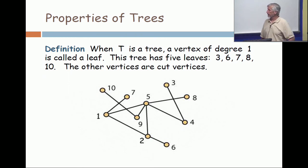So look at that picture carefully and just make sure that you're with me, that you agree that three, six, seven, eight, and ten are leaves. Those are the vertices of degree one, and any vertex which is not of degree one is a cut vertex.